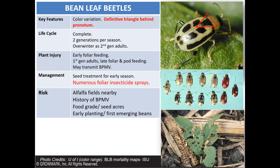The bean pod mottle virus alone has been associated with yield reductions anywhere from 3% up to 50% in severe situations. The beetles acquire the virus from infested weeds or infested soybean residue and transmit it to healthy plants. Bean leaf beetles are not the only vectors — the virus can also be transmitted by grape colaspis, blister beetles, and Mexican bean beetles — but bean leaf beetles are by far the most effective vectors. When the virus is present, you may see mottling on leaves, chlorosis, stunted plants, and higher yield damage than from feeding alone.